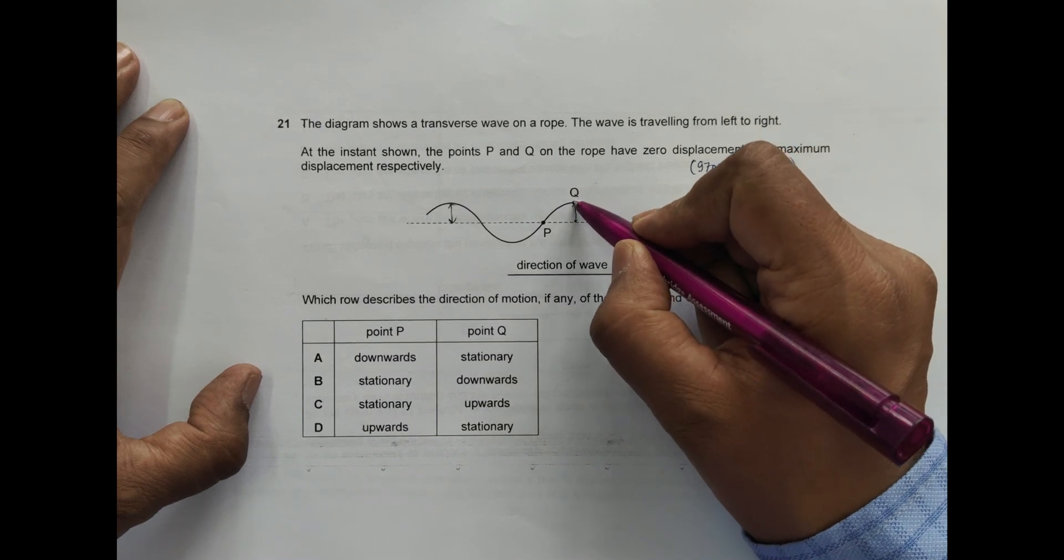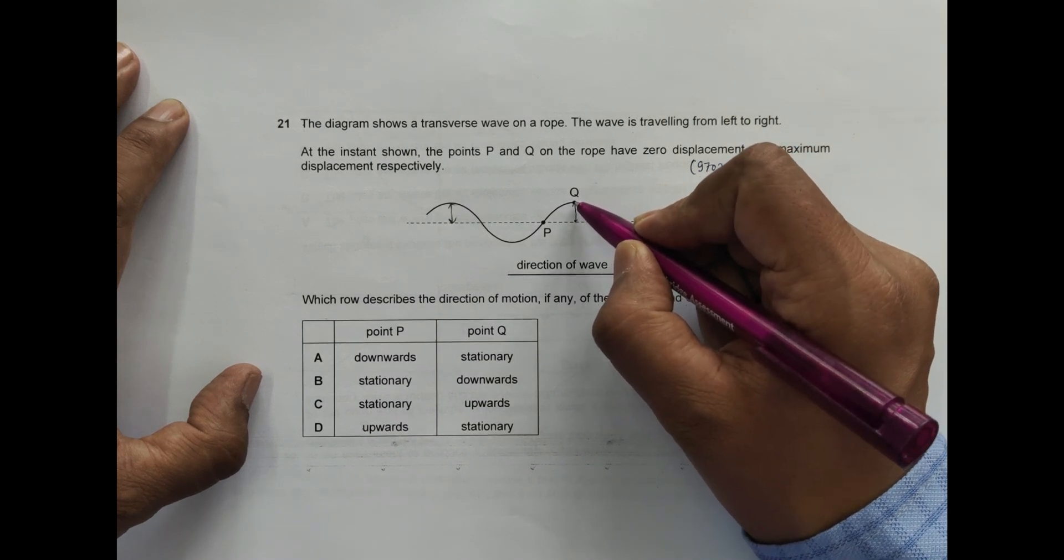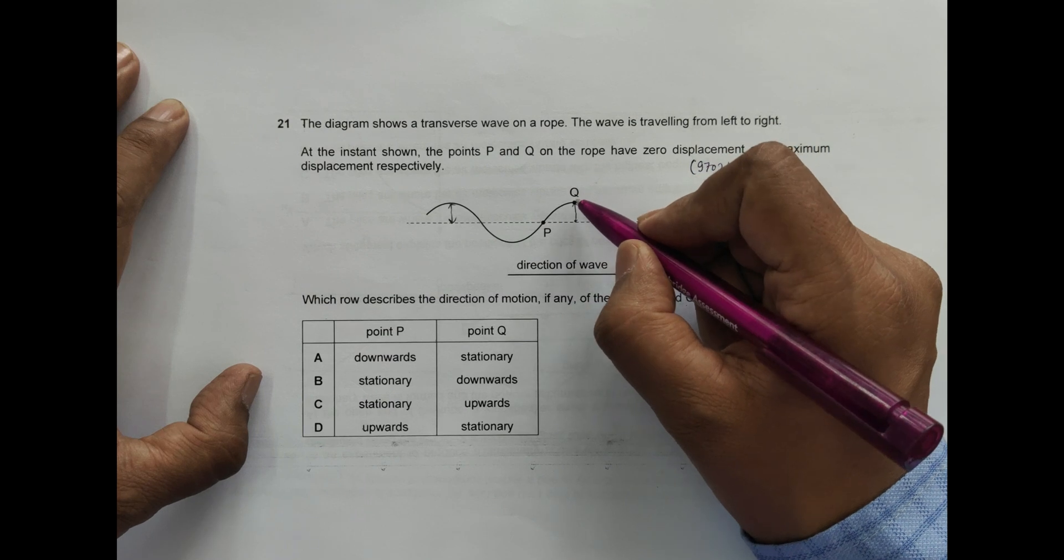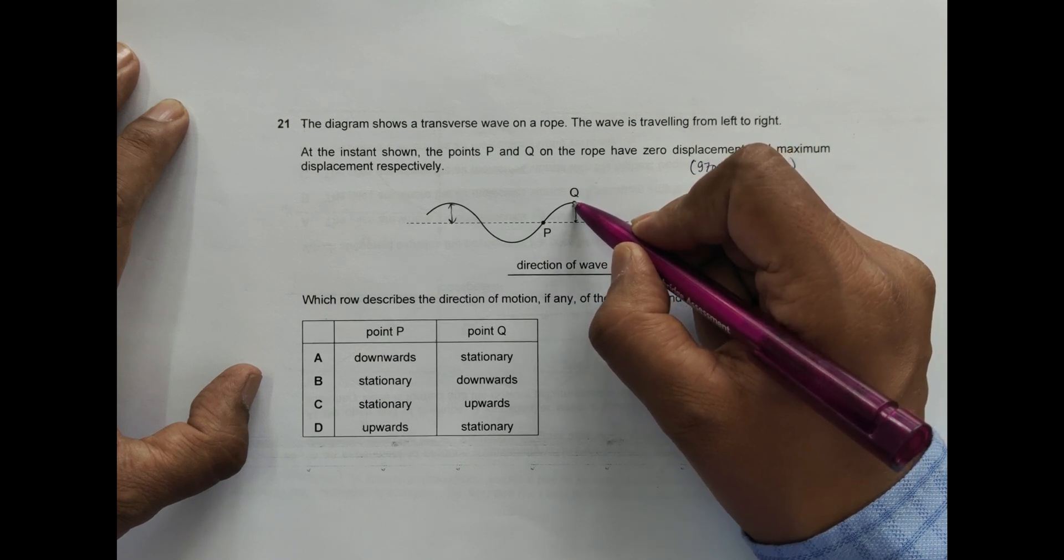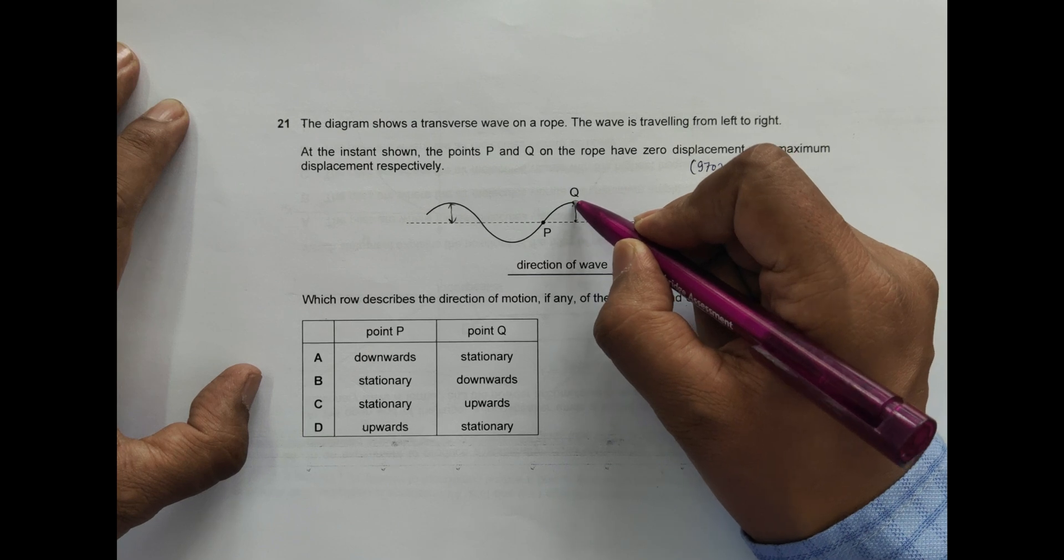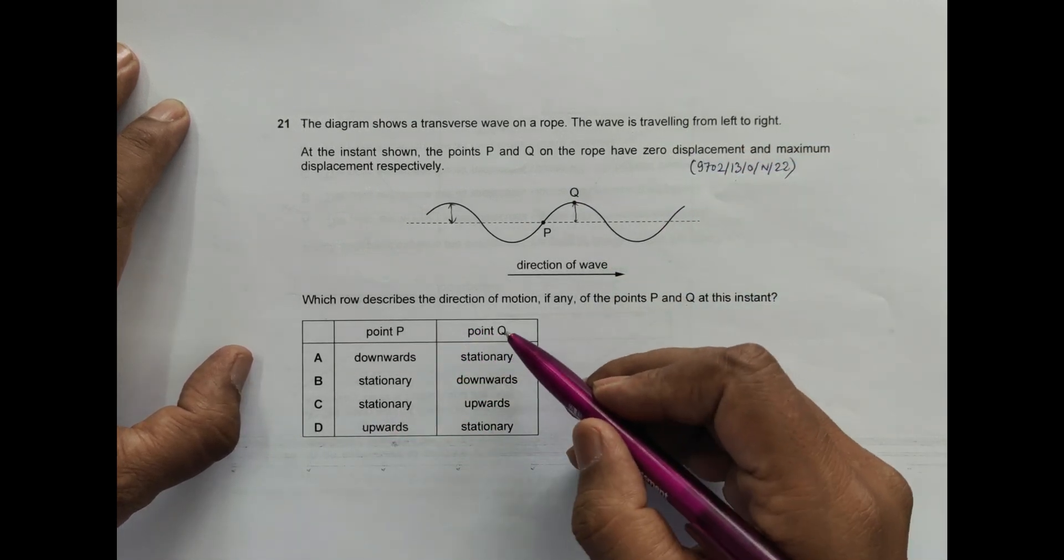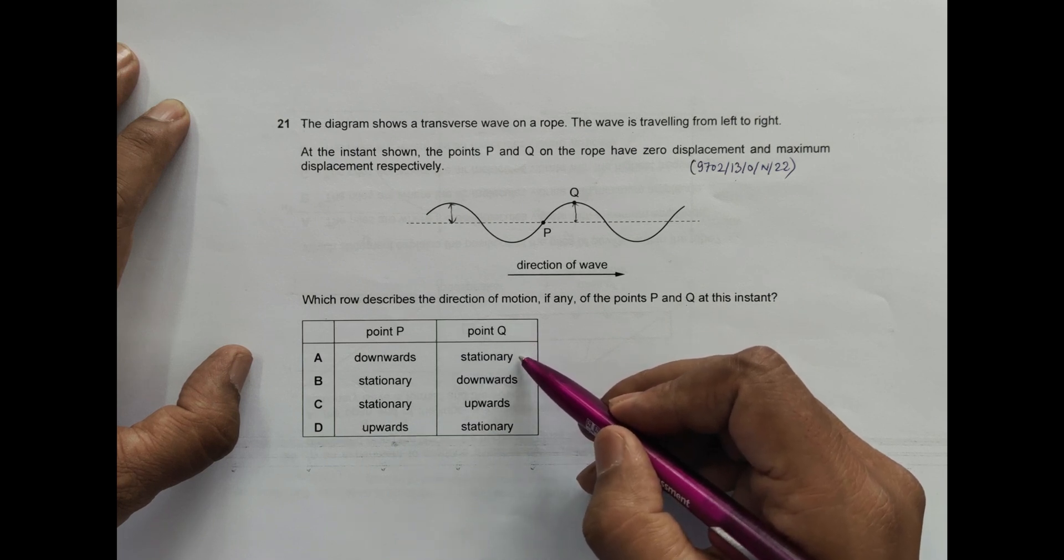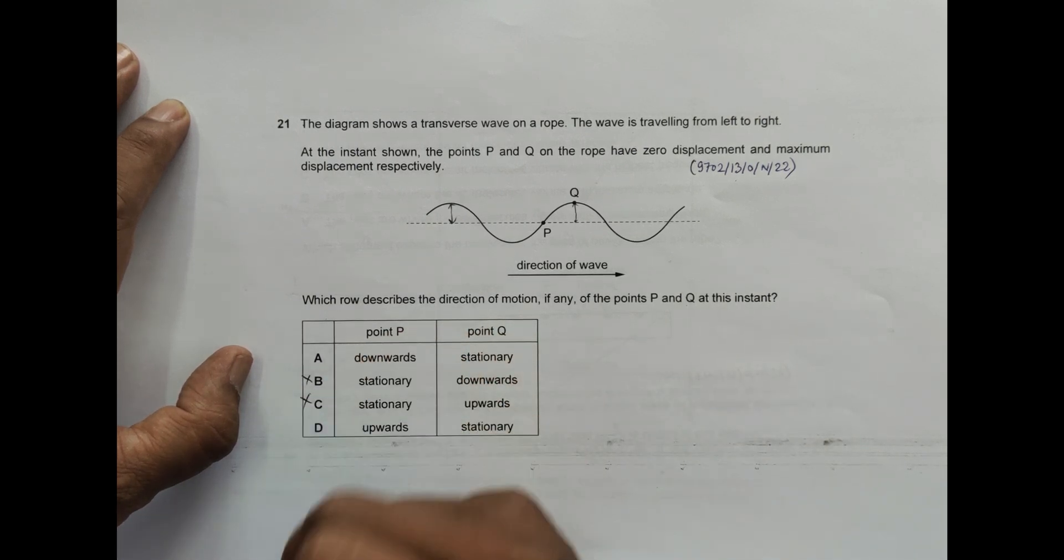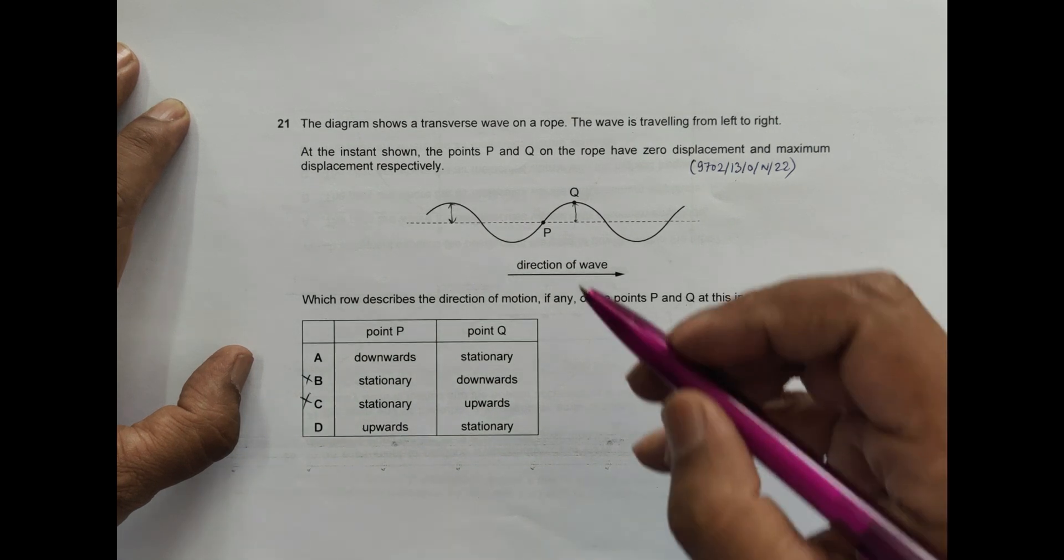As I can see here, point Q is at the maximum position, maximum displacement position, so it should be at rest at this moment. That's why we have to go for the choice where point Q is stationary. So A and D are possible, B and C are impossible.